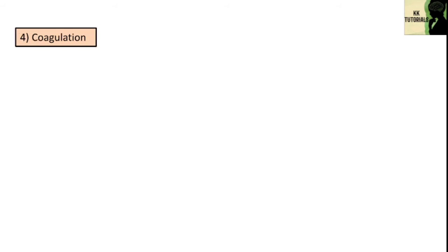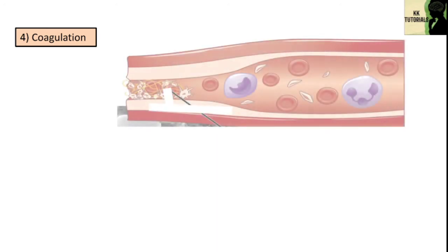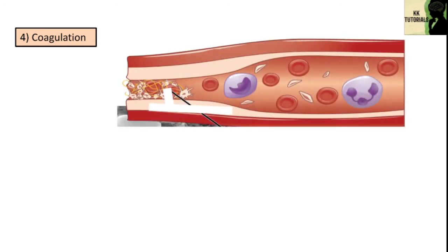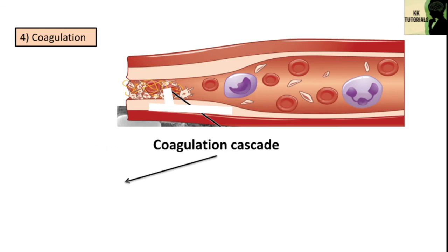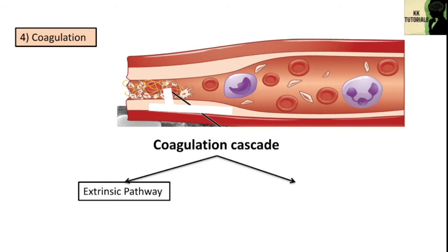The fourth important step is coagulation. This process may be initiated by contact of blood with any foreign surface or with damaged tissue. There are two pathways: one is the extrinsic pathway and the other is the intrinsic pathway.